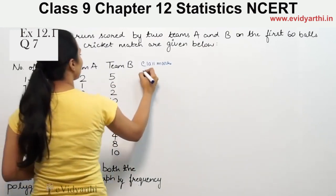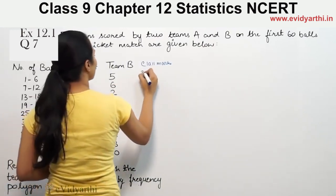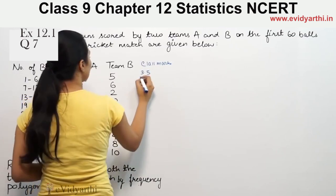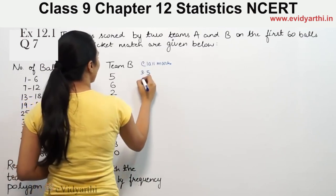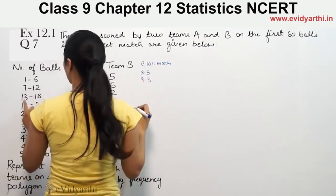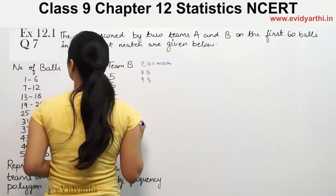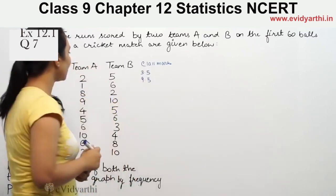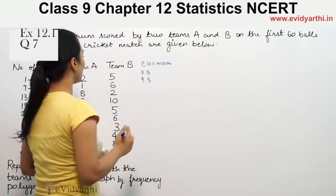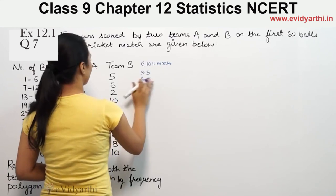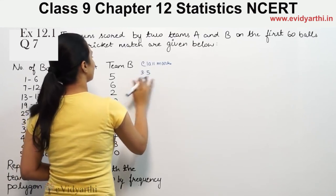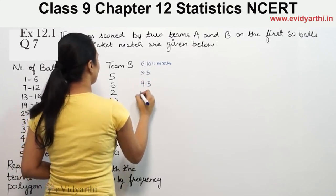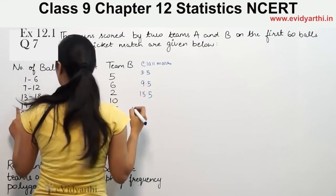So 1 plus 6 is 7, divided by 2 gives 3.5. Then 7 plus 12 is 19, divided by 2 gives 9.5. Then 13 plus 18 is 31, divided by 2 gives 15.5.